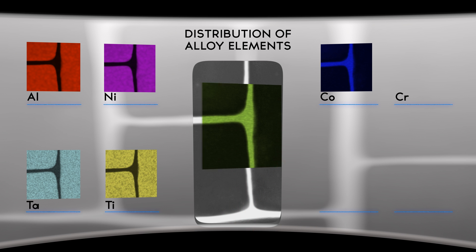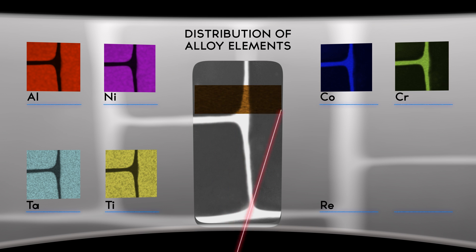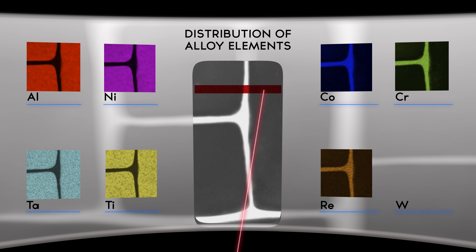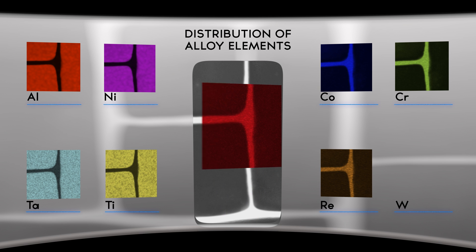And there are others like cobalt, chromium, rhenium and tungsten which partition to the gamma channels. Rhenium and tungsten are especially important alloy elements for high temperature strength.